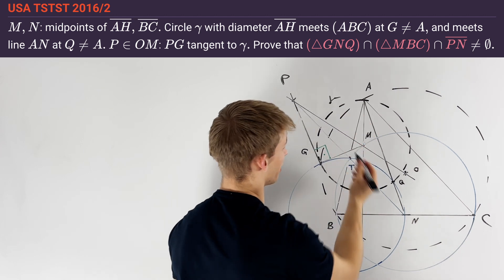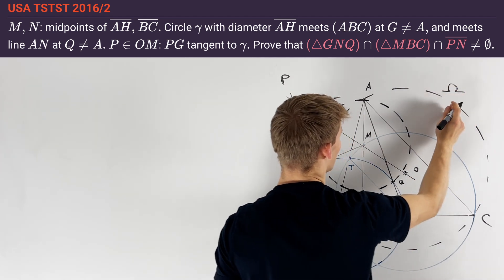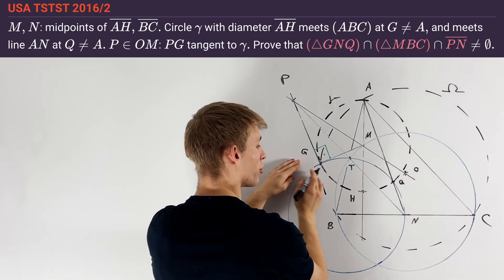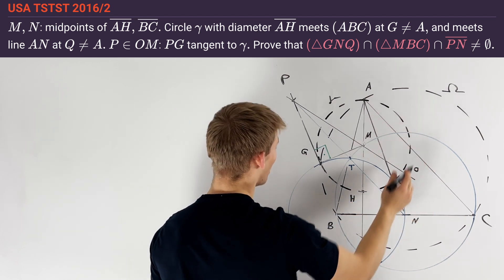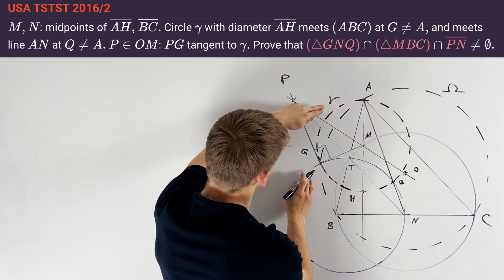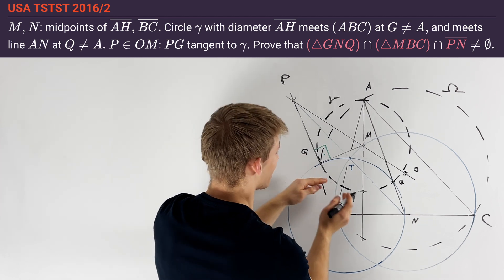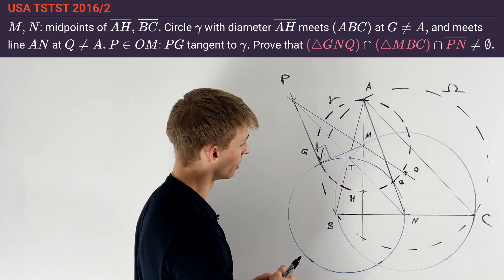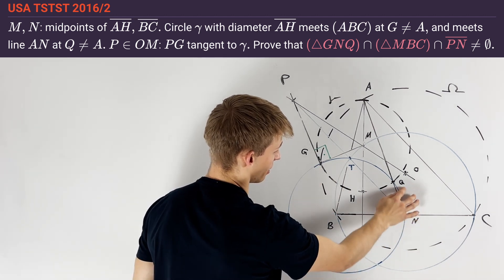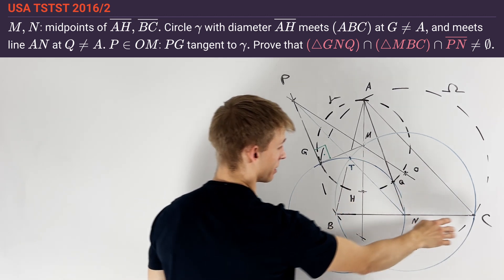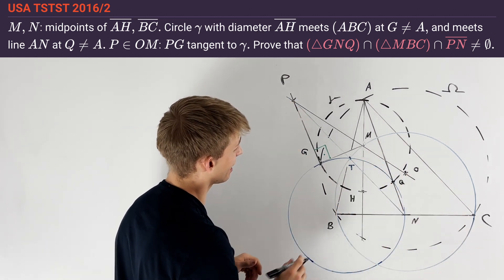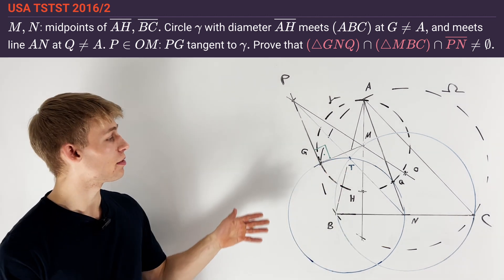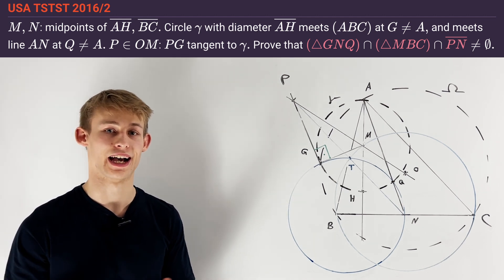Moreover, we intersect circle gamma with the circumcircle omega of triangle ABC at a point G, not equal to A. The point O is defined as the center of circle omega. We take the tangent line to gamma at point G and intersect it with line OM to get the point P. The problem asks us to prove that the circumcircles of GQM and MBC — these two blue circles — intersect at one point T that lies on the line PM.